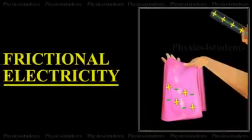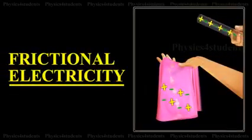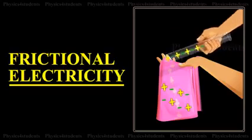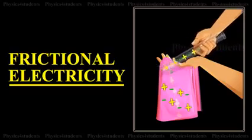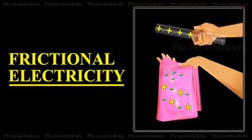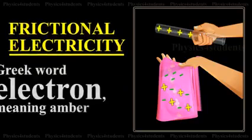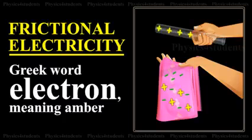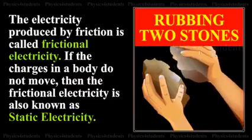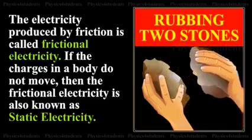Let us know about Frictional Electricity. The substances which acquire charges on rubbing are said to be electrified or charged. These terms are derived from the Greek word 'electron' meaning amber. The electricity produced by friction is called Frictional Electricity.